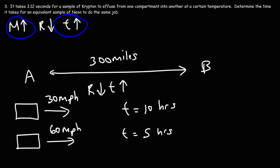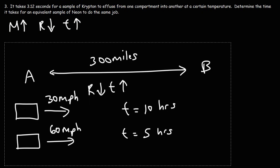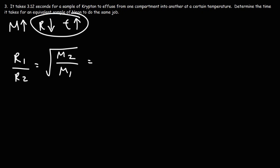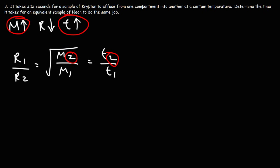The molar mass and the time have a direct-like relationship — when one goes up, the other goes up. Going back to Graham's Law: R1 over R2 equals the square root of M2 over M1. Because time and rate are inversely related, we can substitute: where R1 is on top, T2 goes on top; where R2 is on bottom, T1 goes on bottom. Molar mass and time stay on the same side. So the formula becomes T2 over T1 equals the square root of M2 over M1.